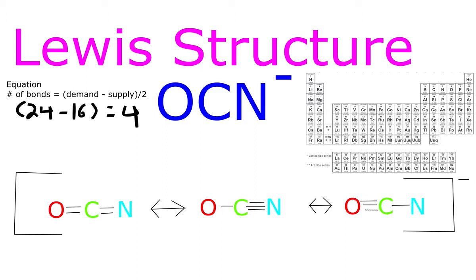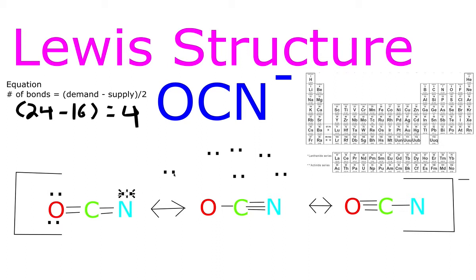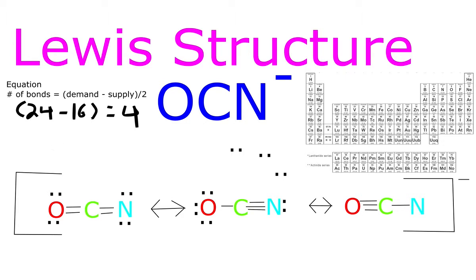Now we need to finish giving our valence electrons. These are electrons I'm going to drag over. Oxygen over here needs to have an octet, so does this nitrogen. This oxygen needs to have an octet, this nitrogen needs an octet, and these need an octet as well. This oxygen needs an octet, so does this nitrogen.